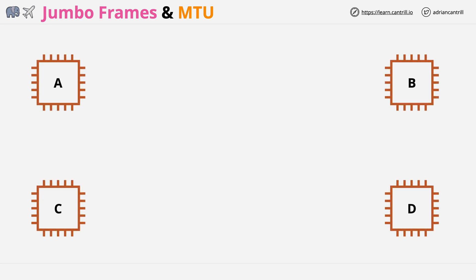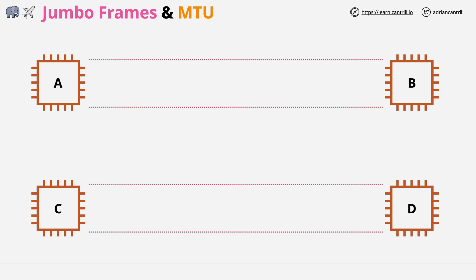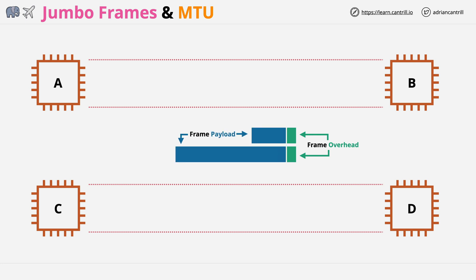Let's visually explore what jumbo frames are and how they help improve performance in certain networking situations. Imagine four EC2 instances: A, B, C, and D. A and B are connected using standard frames, and C and D are using jumbo frames. All frames have a static part known as the frame overhead, which is largely a standard size regardless of the frame size. Then there's the frame payload, which varies in size up to a maximum — 1500 bytes for normal frames and 9000 bytes for jumbo frames.